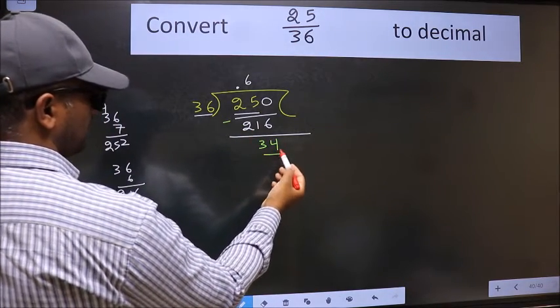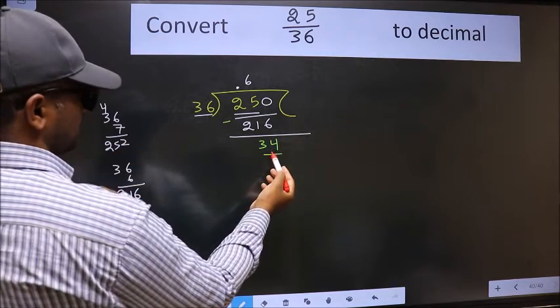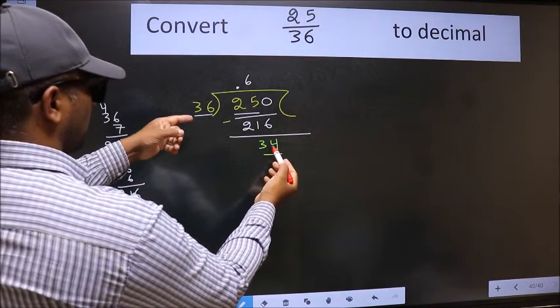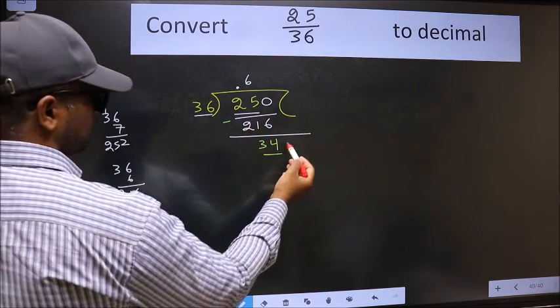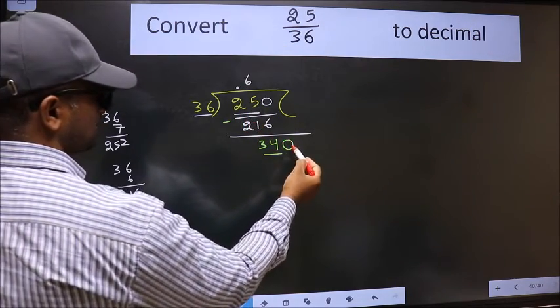Now here we have 34 and here 36. 34 is smaller than 36. And we already have the decimal. So we can directly take 0 this time.